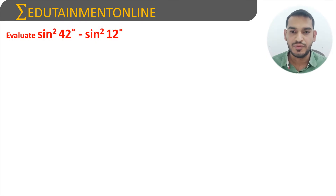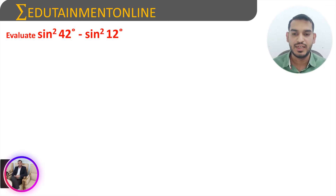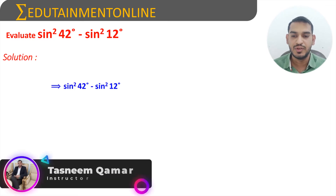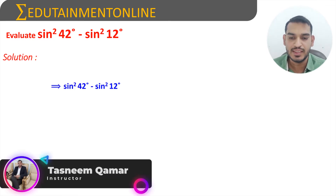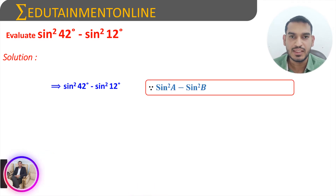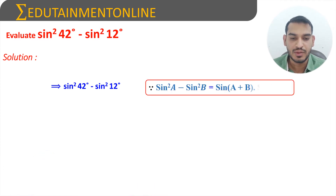Evaluate sin square 42 degrees minus sin square 12 degrees. We know that sin square a minus sin square b is equal to sin of (a plus b) into sin of (a minus b).